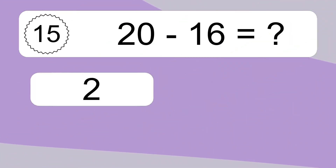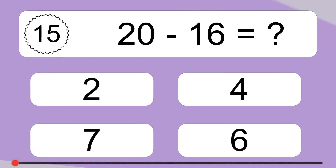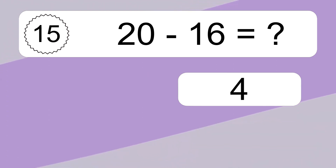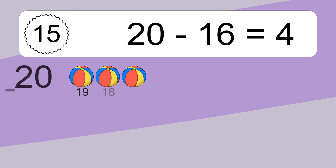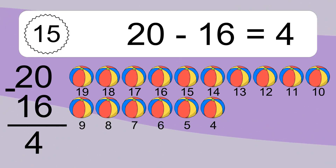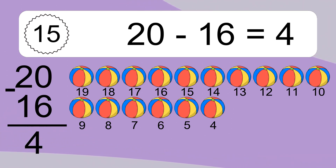20 minus 16 equals what? 20 minus 16 equals 4. Let's count it: 19, 18, 17, 16, 15, 14, 13, 12, 11, 10, 9, 8, 7, 6, 5, 4.